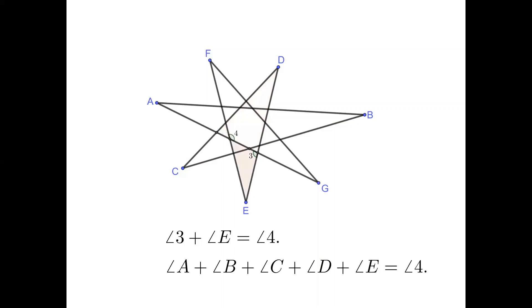Keep going. Angle 4 is the sum of angles 3 and E. For a similar reason, angle 4 is the sum of five angles A, B, C, D, and E. We have two remaining angles, F and G.